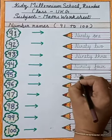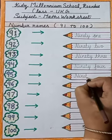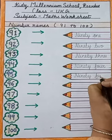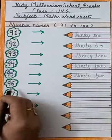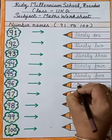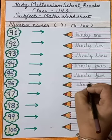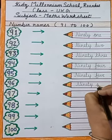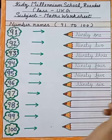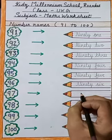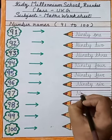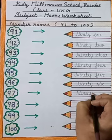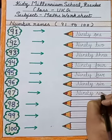Next is 95. Spelling is N-I-N-E-T-Y, ninety, F-I-V-E, five. 95. Next is 96. Spelling is N-I-N-E-T-Y, ninety, S-I-X, six. 96.